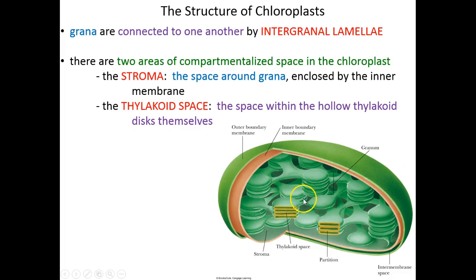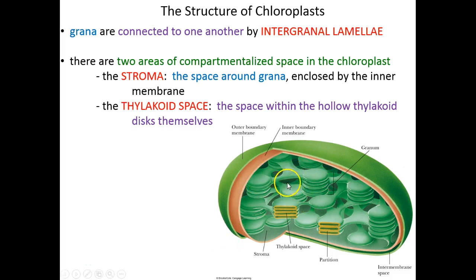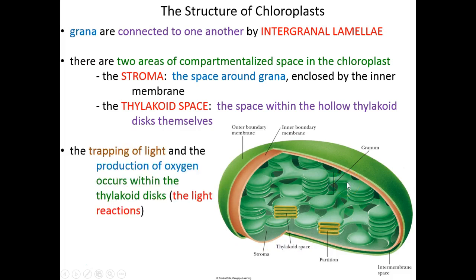Let's start at the most interior portion of a chloroplast and work our way out. The most interior you can get is the thylakoid space — the hollow area within a single thylakoid disk. Many thylakoid disks stacked together make a granum. Granum are connected to one another by intragranal lamellae, and all stacks taken together are grana. The empty space outside the grana, enclosed by the inner membrane, is called the stroma of the chloroplast. Surrounding the stroma is the inner membrane, then the inner membrane space, leading to the outer membrane.